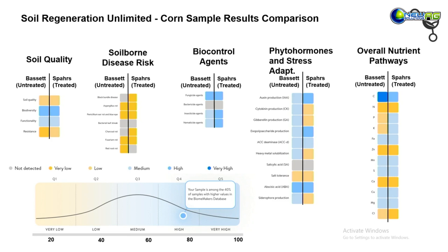This is looking at risk, which does take into account biocontrol agents, but we'll look at some interesting changes in the actual levels of some of these pathogenic species. Biocontrol agents was one area where we saw some difference — the manure-treated field did have higher levels of insecticidal and nematicidal agents, as indicated here by that darker blue.